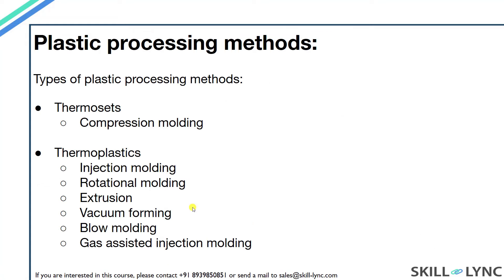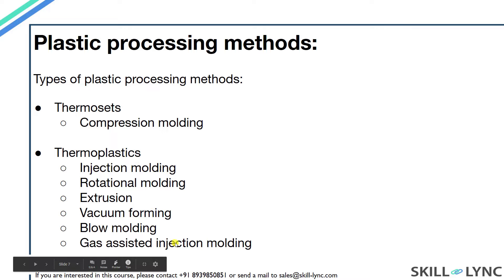Let's move on to plastic processing methods. Injection molding is not the only plastic processing method available. For thermosets we have compression molding, and for thermoplastics we have injection molding, rotational molding, extrusion, vacuum forming, blow molding, and gas assisted injection molding.